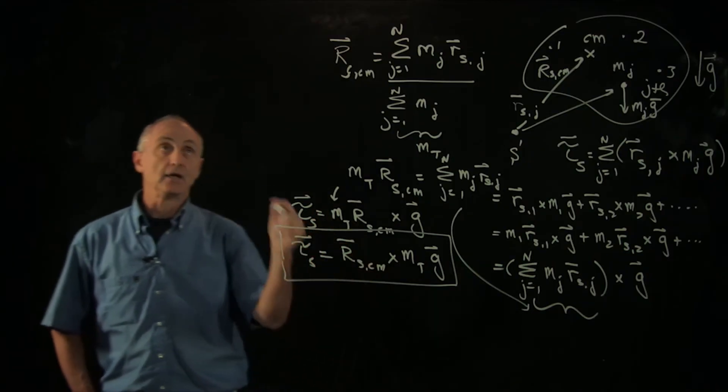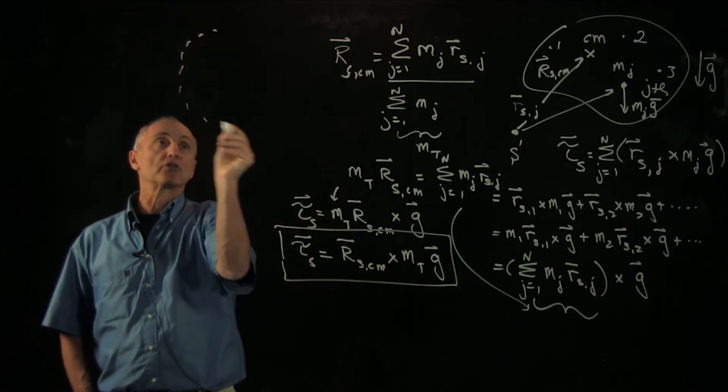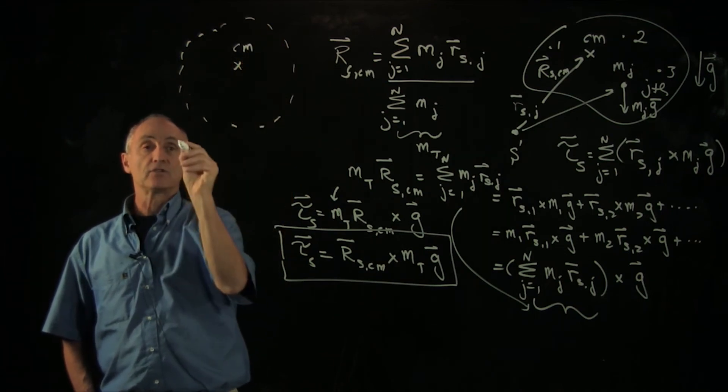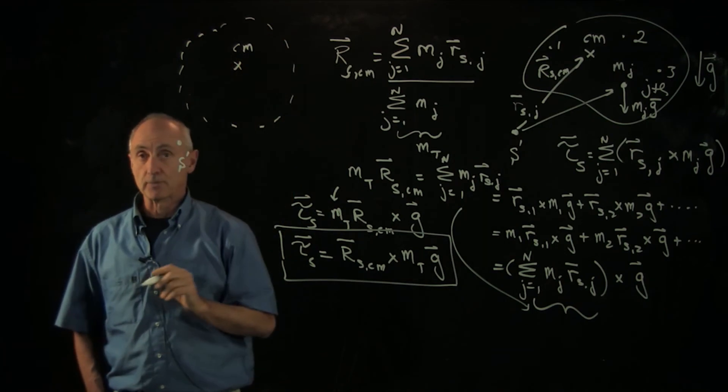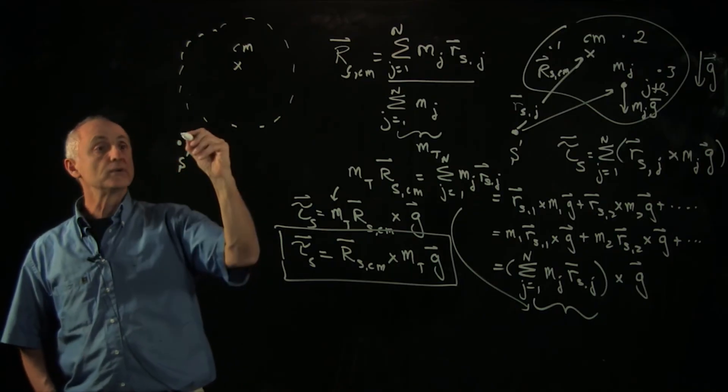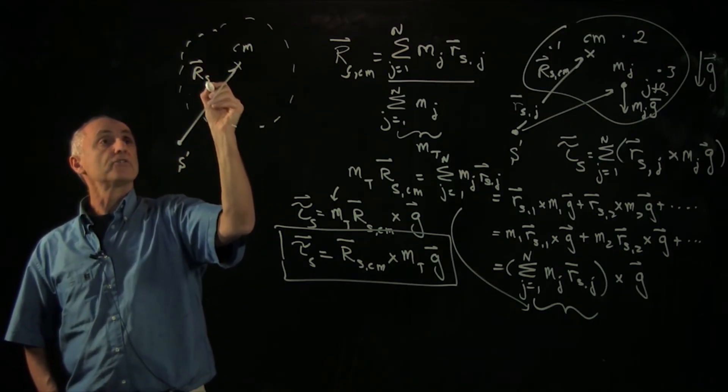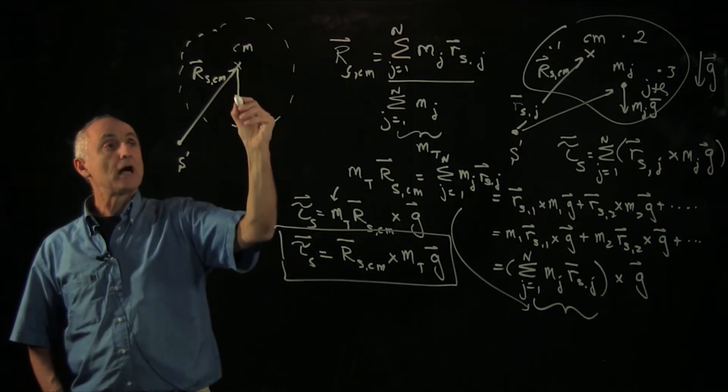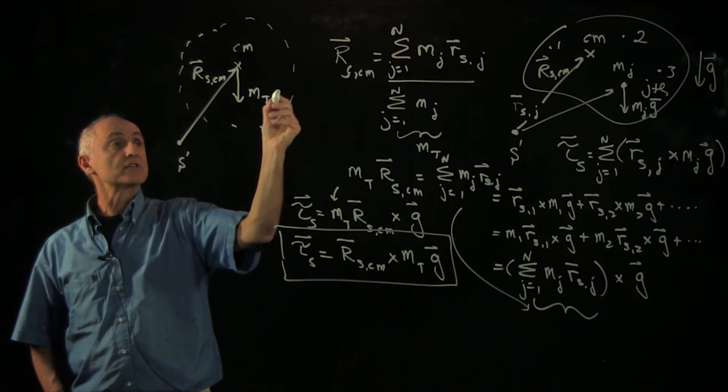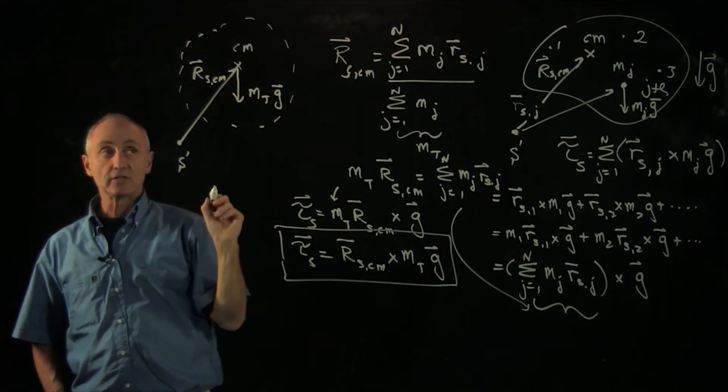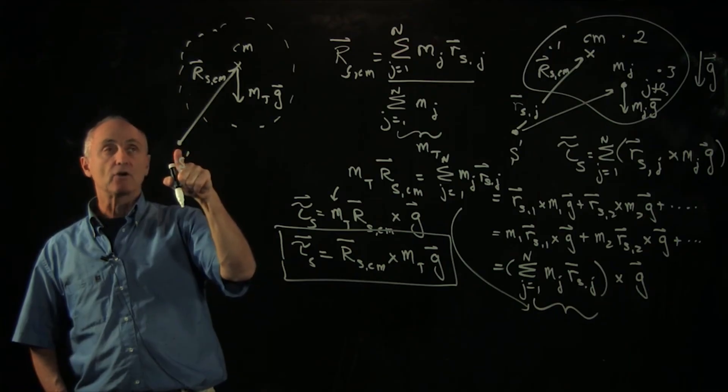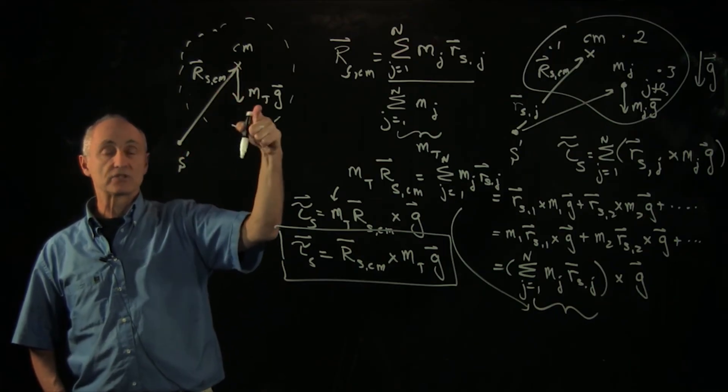Now what does that mean? Well, let's just denote our system like this. Let's say here's the center of mass, and here's the point s. So what we need to do is we need to draw the vector rscm and apply all the gravitational force at the center of mass. And then our torque about s is the vector rs to where the force is acting cross m total g.